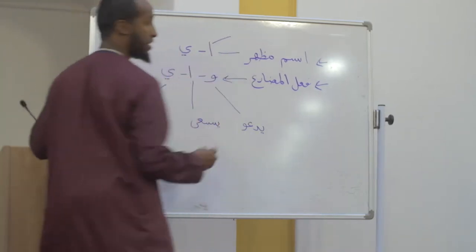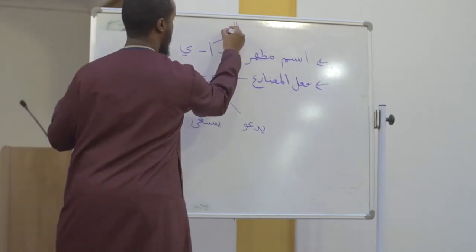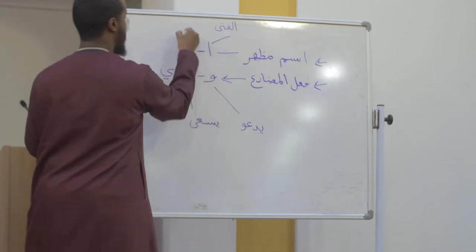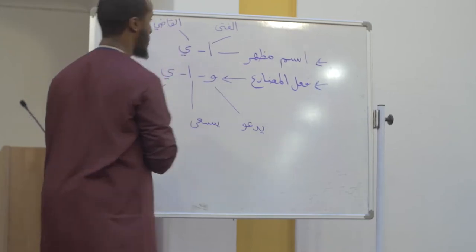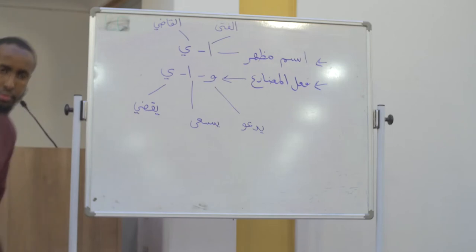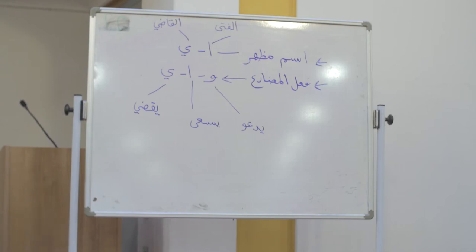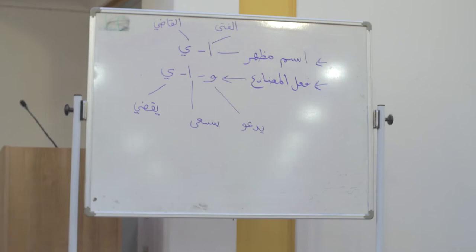The Alif for the ism would be alfata. And the Ya would be alqadi. Are we all together?